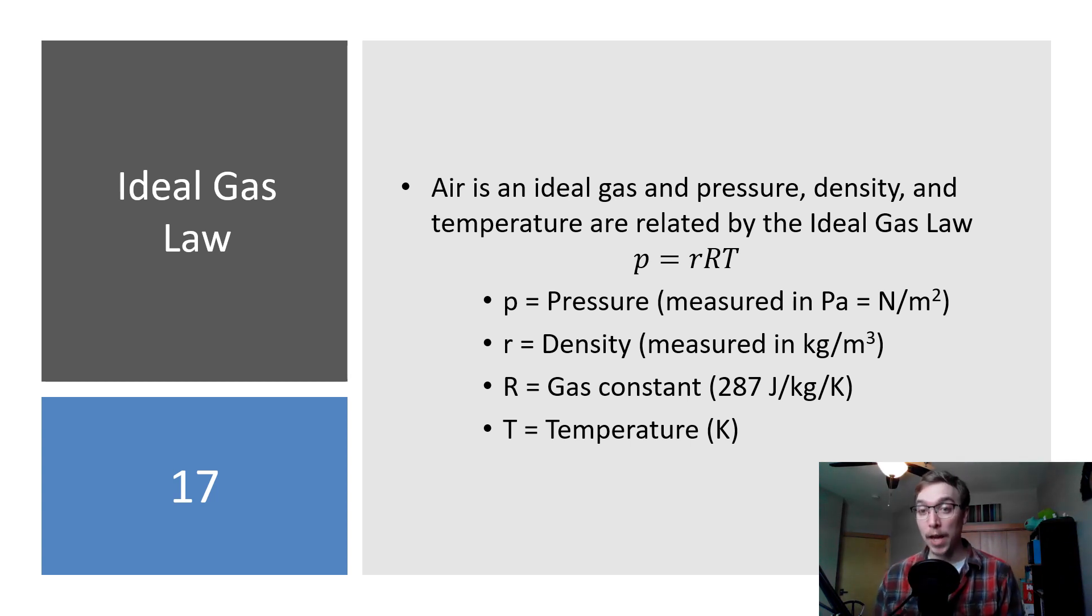Because air is an ideal gas and because pressure, density, and temperature are related by the ideal gas law, we can use that to determine things like pressure. So here in this equation, pressure p in Newtons per meter squared is equal to r, which is our density measured in kilograms per cubic meter, multiplied by the gas constant 287 Joules per kilogram per Kelvin, times temperature in Kelvin. So that's one way that we can figure out pressure. Now pressure is very dependent on local conditions.